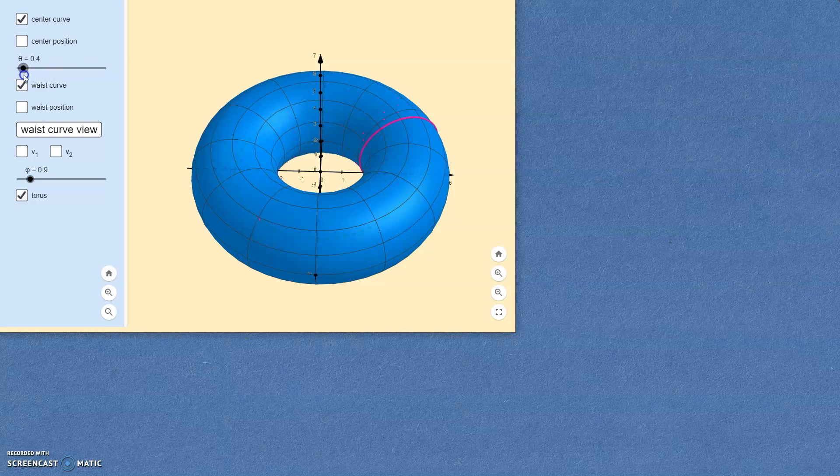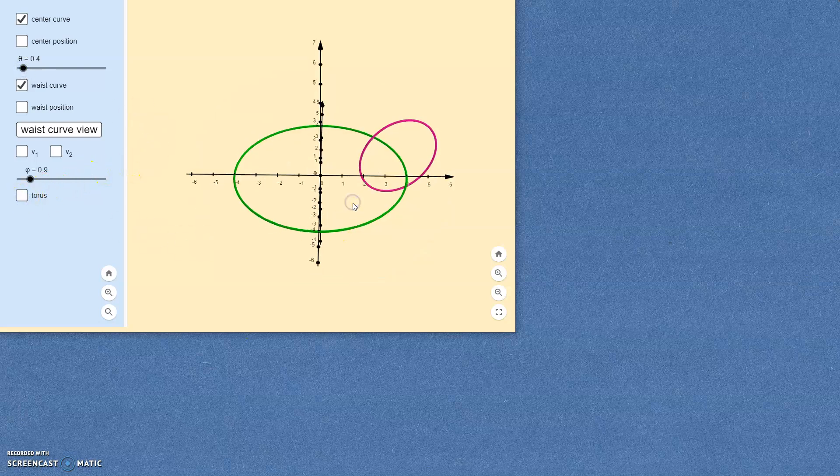So all we have to do is find some way of describing the points on this pink circle. And if we could do that, then we'll basically write down all the points on the torus if we just let that theta move to different positions. So first of all, let's get rid of the torus there and think about these circles.